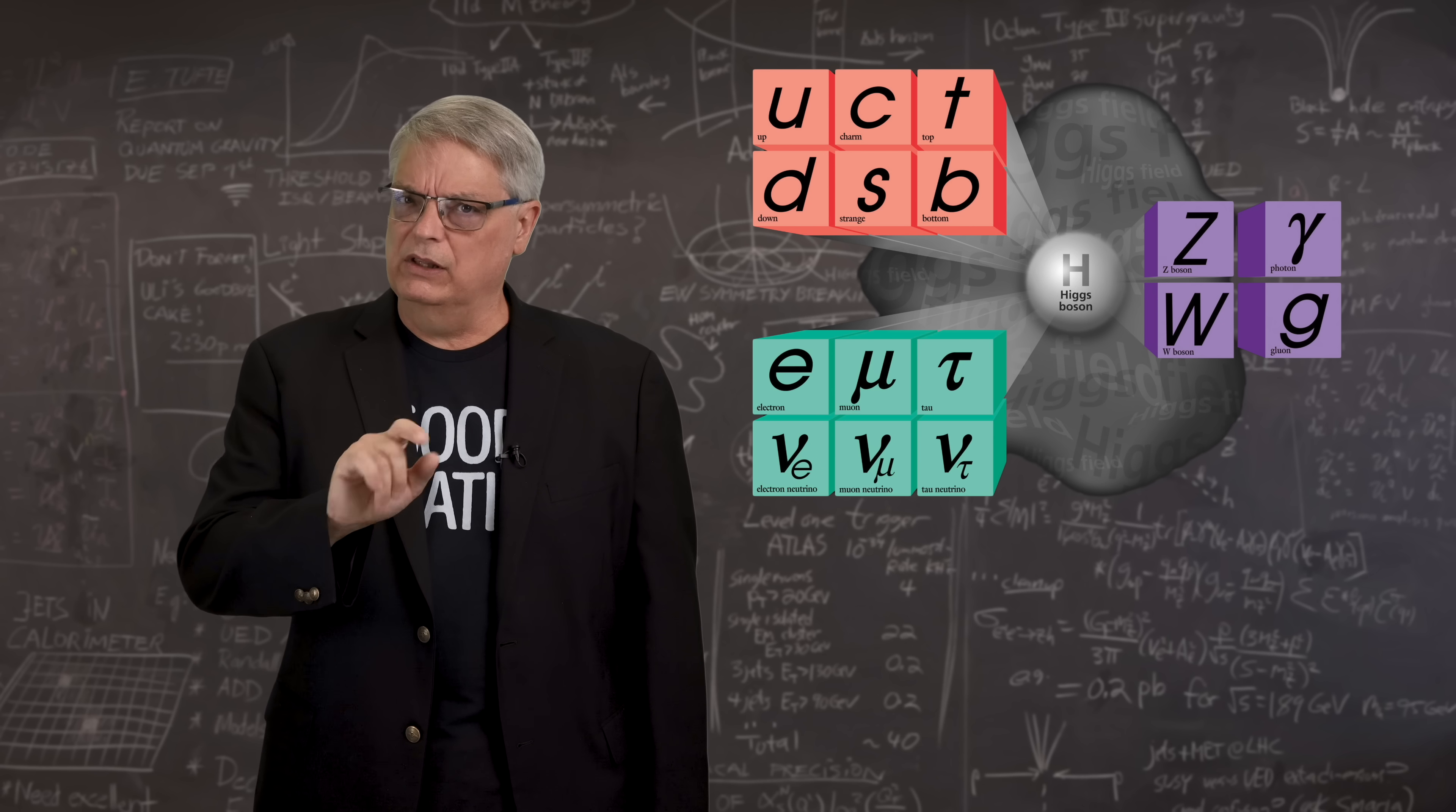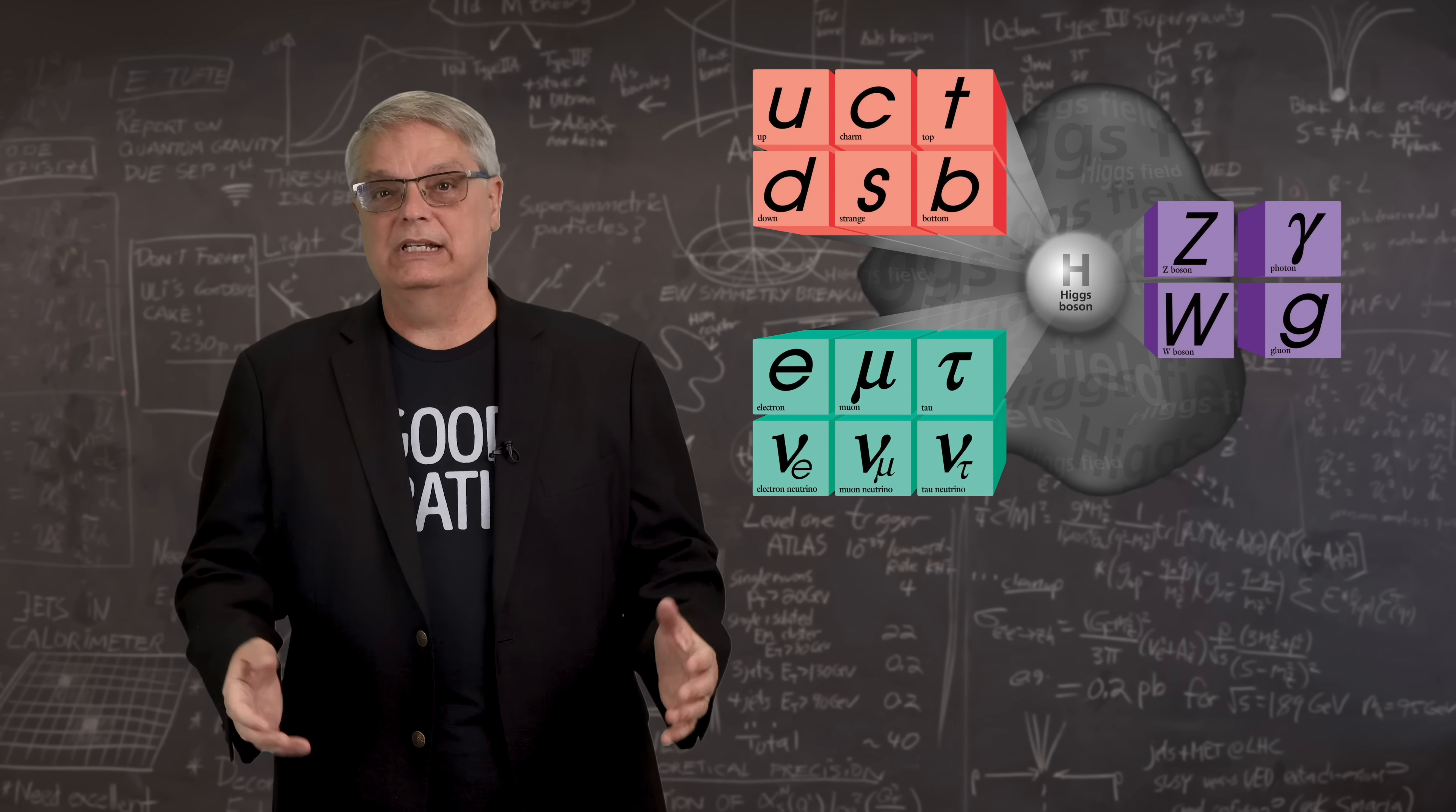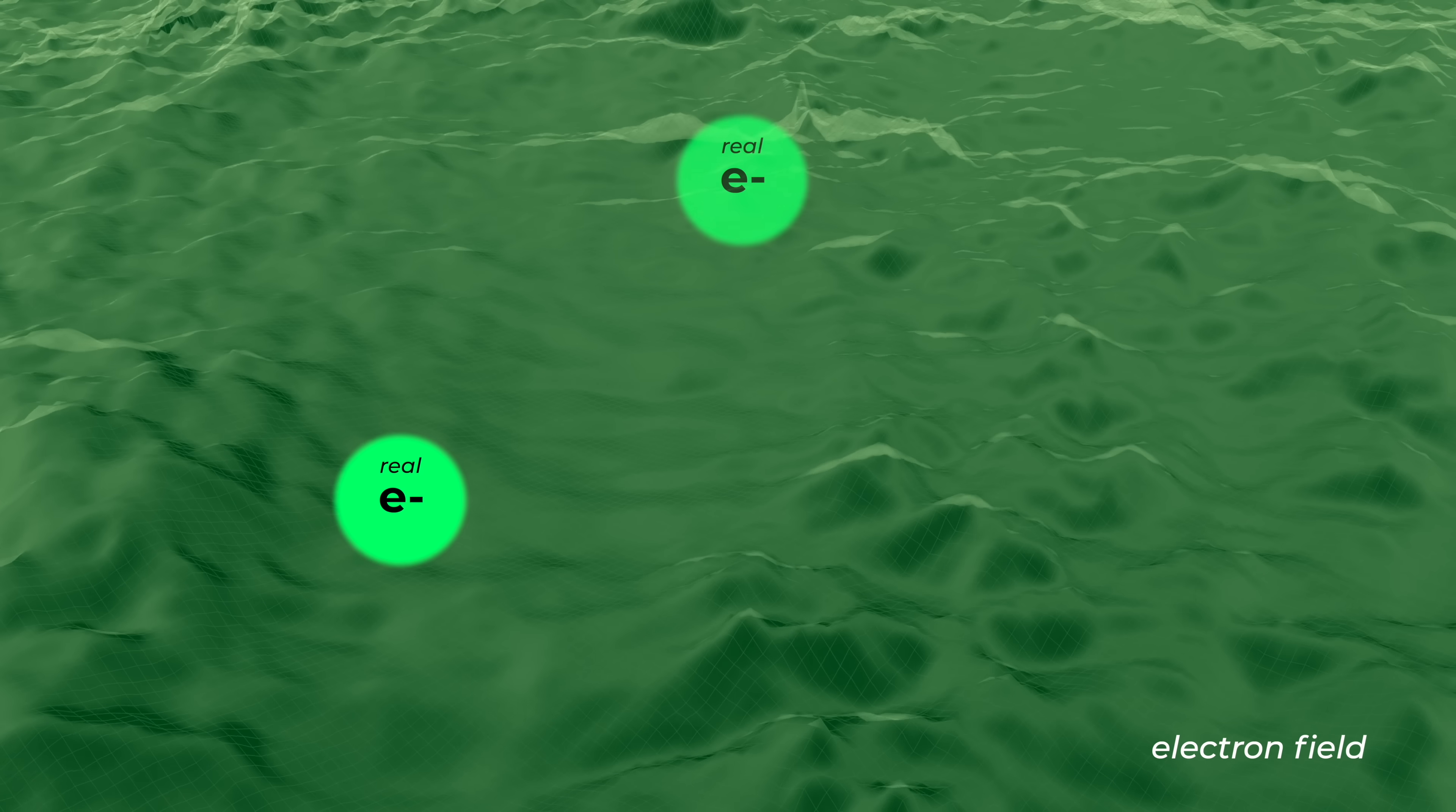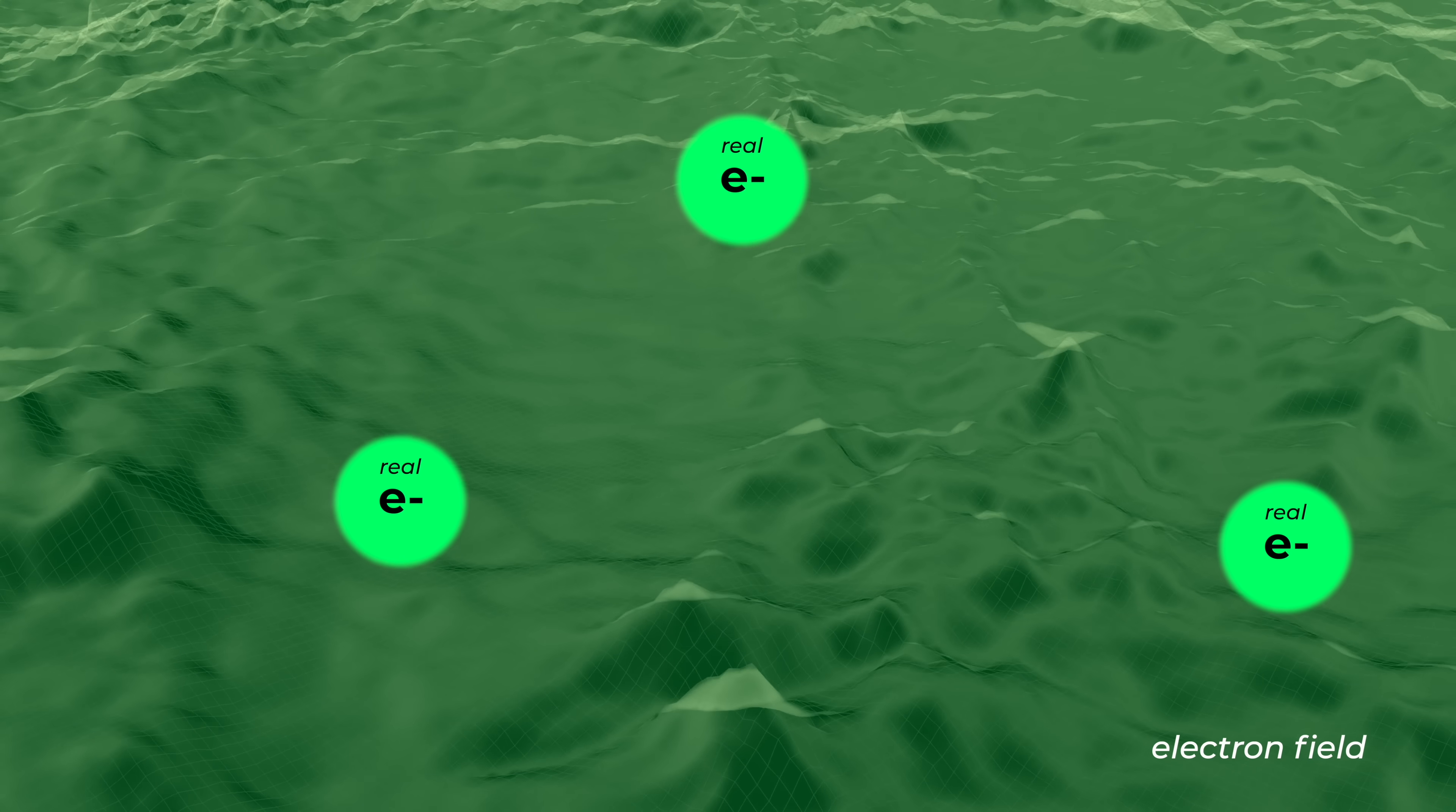Forget everything except the electron field. It fills space. In the classical world, it doesn't do anything. But in the quantum world, it can vibrate. And if it vibrates in exactly the right way, you have an electron. Indeed, that's what the electron is, a very specific vibration of the electron field.